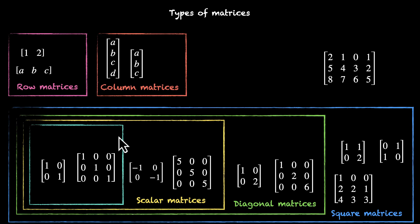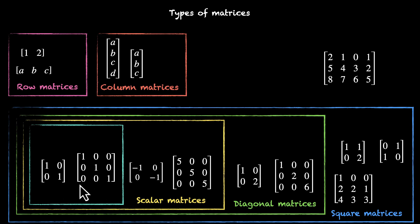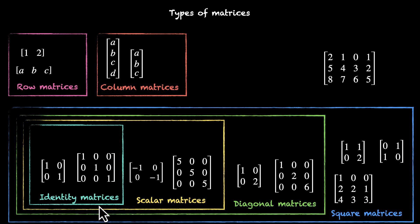Let's make one more box. What's special about the matrices inside? This constant is one in this case. These two are also scalar matrices, but the number you put on the diagonal is just one — you can't put anything else. And one has a close connection with the word identity. Hence these are called identity matrices.